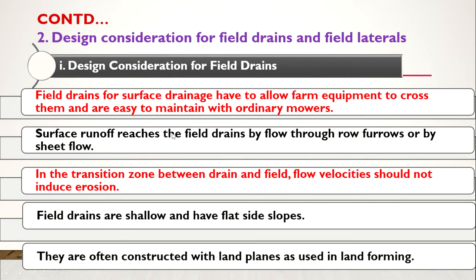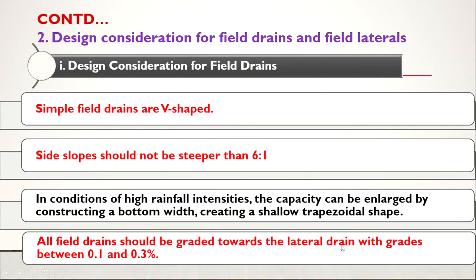Surface runoff reaches the field drains through row furrows or by sheet flow. In the transition between the drain and the field, flow velocity should not induce erosion. The flow velocities in the smaller, shallower channels should be lesser so as not to cause erosion. They are shallower and have flat side slopes. Mainly they are V-shaped, constructed with a side slope steeper than 6:1. In conditions of high rainfall intensities, the capacities can be enlarged.